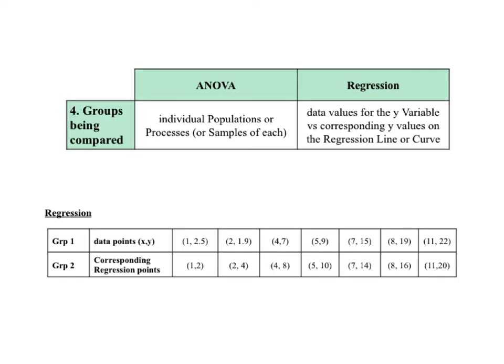Groups are sets of data like populations or samples. Regression really doesn't compare groups as such. But if one wants to explore the similarity between regression and ANOVA, one might describe regression concepts in terms used by ANOVA. In the regression example, the sample of paired XY data comprises group 1, and group 2 consists of the corresponding XY points on the regression line — meaning they have the same X values. So the formula for the regression line is Y equals 2X, and for each value of X in group 1, we calculate the value of Y using Y equals 2X.